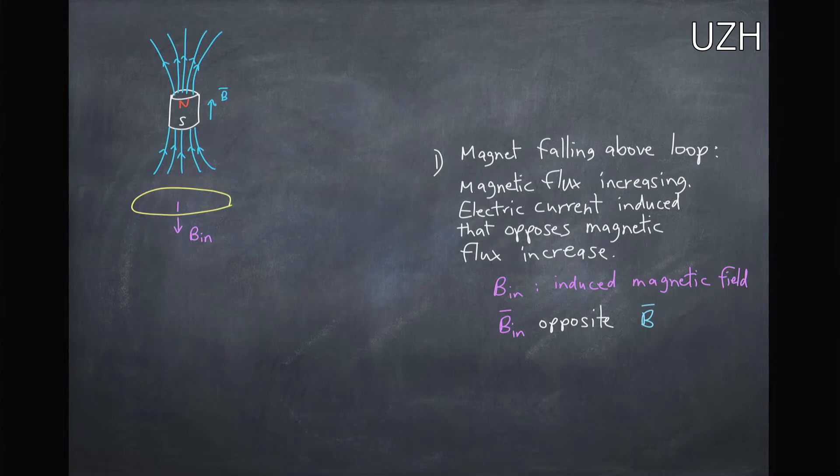What will happen is an electrical current will be generated in this loop which generates a magnetic field that wants to oppose this magnetic flux increase.